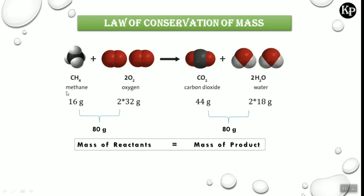If you check the mass: CH₄ has 16 grams; oxygen gas is 32 grams but there are two molecules, so 2 × 32 = 64 grams. In the products, CO₂ is 44 grams; two water molecules — one water molecule is 18 grams, so two water molecules = 2 × 18 = 36 grams. Total reactant mass is 80 grams and total product mass is also 80 grams. This is the law of conservation of mass — the mass of reactants equals the mass of products.